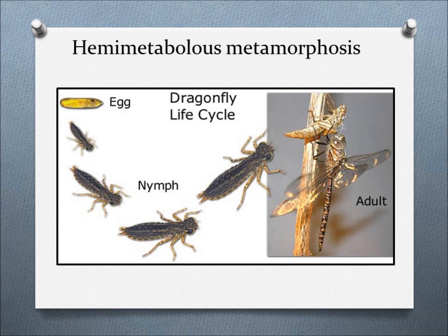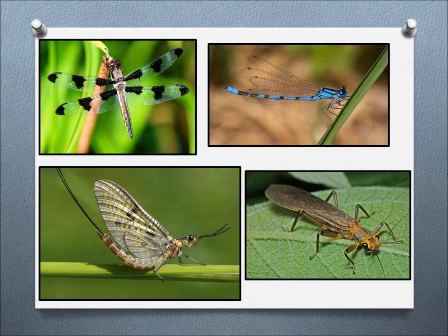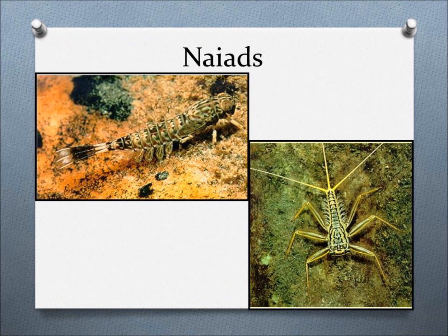Insects that go through incomplete metamorphosis go through immature stages called instars. Each time an insect molts, it goes from one stage of growth to another. Each succeeding instar looks more and more like their adult stage of life. The immature insect is known as a nymph. A nymph looks like an adult, except they lack sexual organs and wings. Insects like dragonflies, damselflies, mayflies, and stoneflies are aquatic insects, and those immature stages are called naiads.